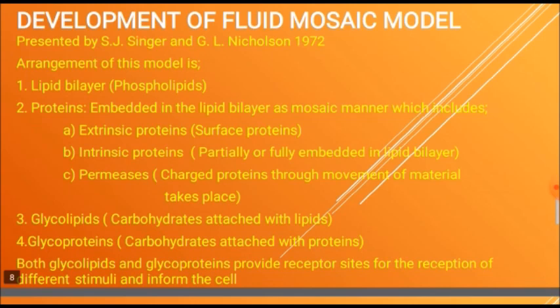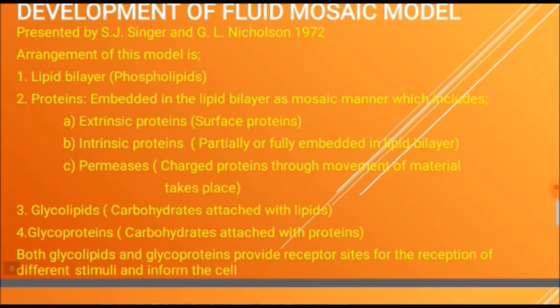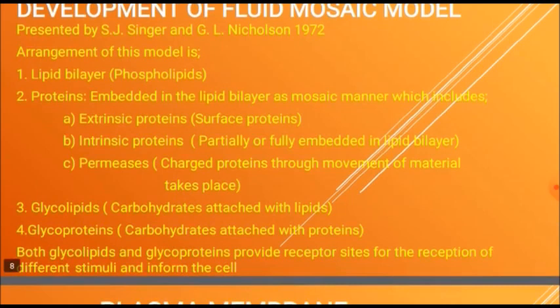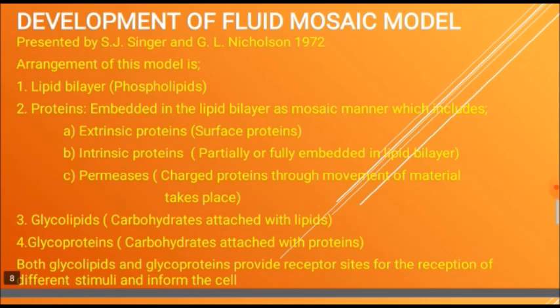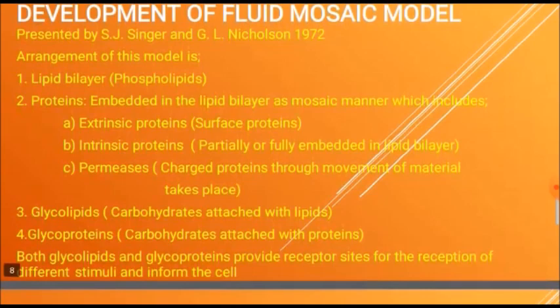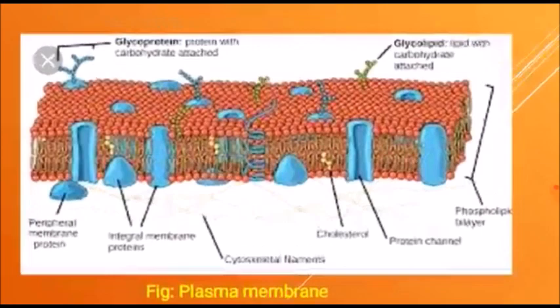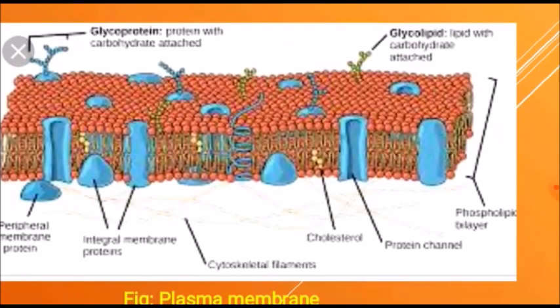In addition to intrinsic and extrinsic proteins, there are permeases, which are charged proteins through which the movement of material takes place. Glycolipids and glycoproteins are conjugated molecules: glycolipid is the association of carbohydrates with lipids, while glycoprotein is the association of carbohydrates with proteins. Both glycolipids and glycoproteins provide receptor sites for the reception of different stimuli and inform the cell.